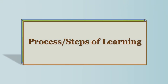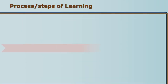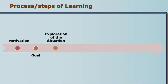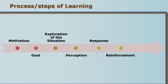Now let us understand each step involved in this process of learning. When we are motivated and have set up the goal, we explore the situation in front of us, we perceive it, we make meaning of that situation, and accordingly we respond. Reinforcement helps us to learn it properly, and then we integrate several responses in order to reach the goal.